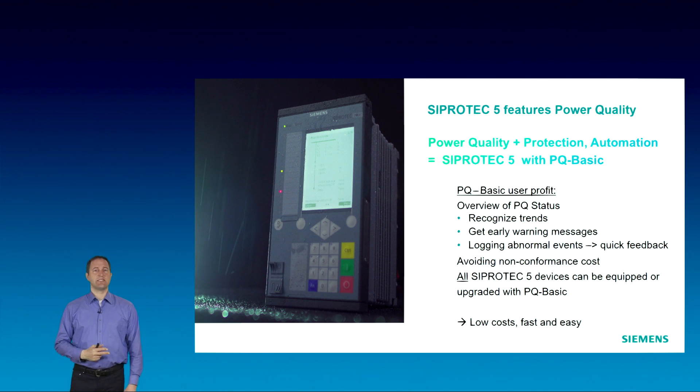Abnormal events can be logged, so PQBASIC gives you quick feedback in case of an anomaly. You have concrete information of the history of an event and you need not measure with a portable device on site after a claim.